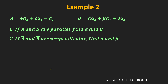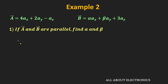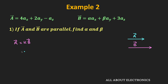In the next example, we have been given two vectors A and B. We must find α and β when A and B are parallel, and when they are perpendicular. For the parallel case, vector A = K × vector B, where K is a scalar. This means their components satisfy Ax = K·Bx, Ay = K·By, and Az = K·Bz.